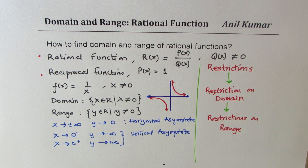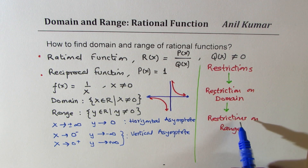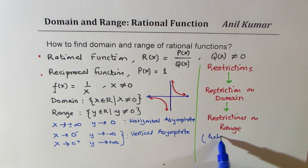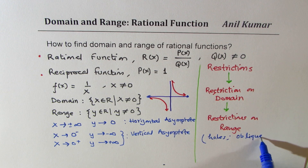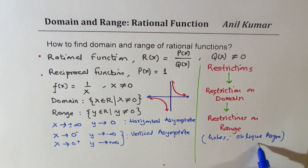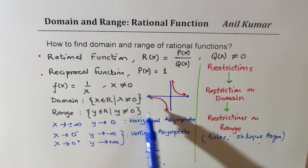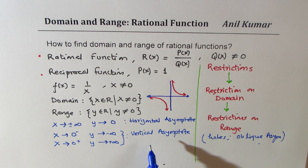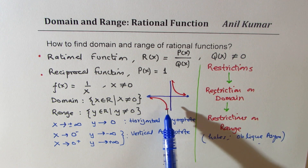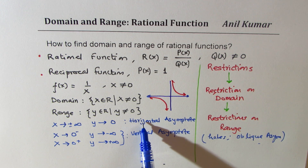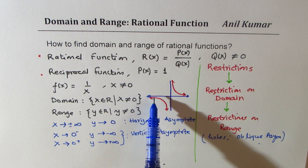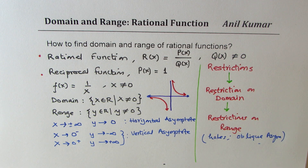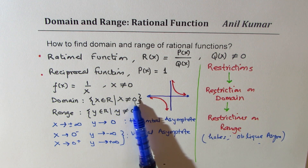We'll actually learn about more types of asymptotes. Specifically, we'll also look into other restrictions, which are holes and oblique asymptotes — we'll understand these later in this video. A reciprocal function could have horizontal and vertical asymptotes. In simple examples, the vertical asymptote is never crossed. So a rational function like 1/x is restricted: it cannot have x equals 0 or y equals 0.